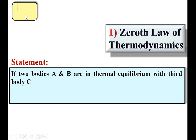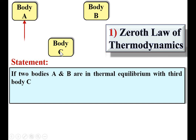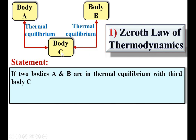Let us say this is body A and this is body B. According to the statement, if the two bodies A and B are in thermal equilibrium with the third body C — let us say over here this is the third body C, and both A and B are in thermal equilibrium with body C.